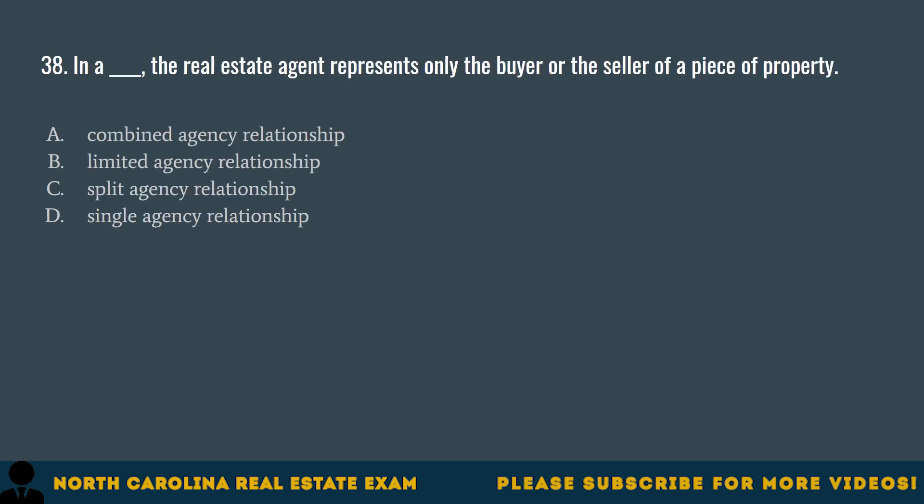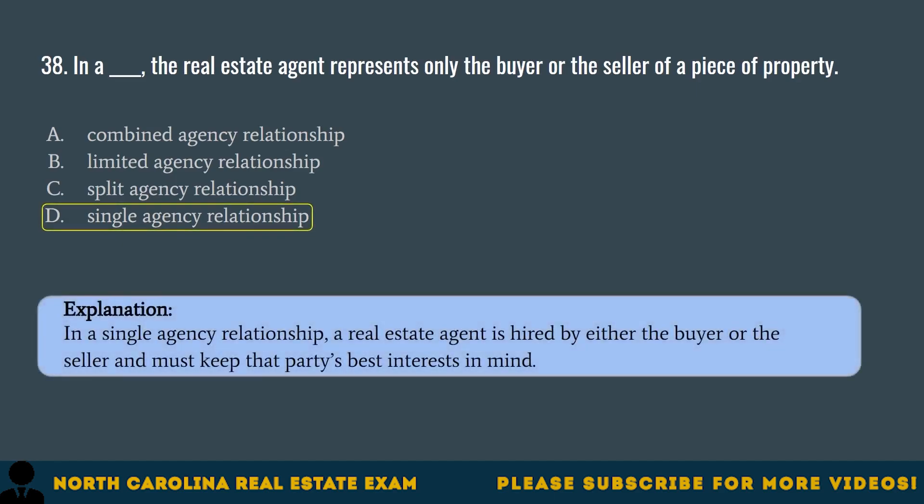Question 38. In a blank, the real estate agent represents only the buyer or the seller of a piece of property. A. Combined agency relationship. B. Limited agency relationship. C. Split agency relationship. D. Single agency relationship. The correct answer is D. Single agency relationship. In a single agency relationship, a real estate agent is hired by either the buyer or the seller and must keep that party's best interest in mind.